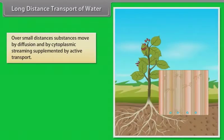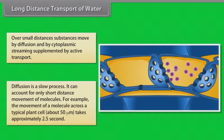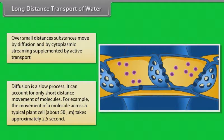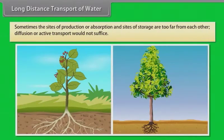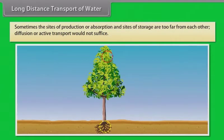As we all know, over small distances substances move by diffusion and by cytoplasmic streaming, supplemented by active transport. Long distance transport of substances within a plant cannot be by diffusion alone — diffusion is a slow process. It can account for only short distance movement of molecules. For example, the movement of a molecule across a typical plant cell takes approximately 2.5 seconds. Some trees are up to 50 feet tall, so think how many years it would take for movement of molecules over 25 to 30 feet by diffusion alone. Sometimes the sites of production or absorption and sites of storage are too far from each other, so diffusion or active transport would not suffice.